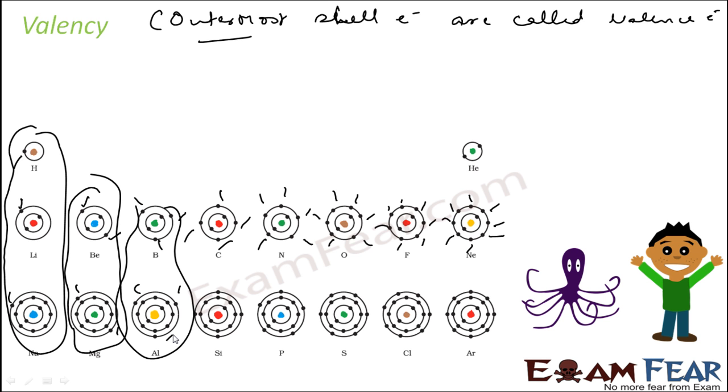So there are two definitions. Valency is nothing but the combining capacity of the atom. And valence electron is nothing but the electron present in the outermost shell.